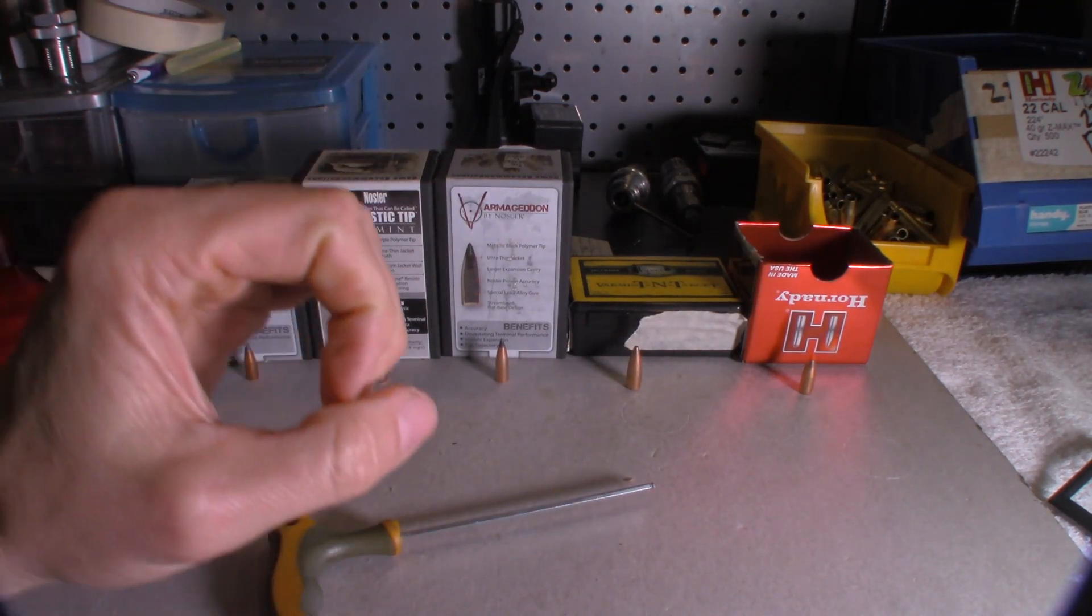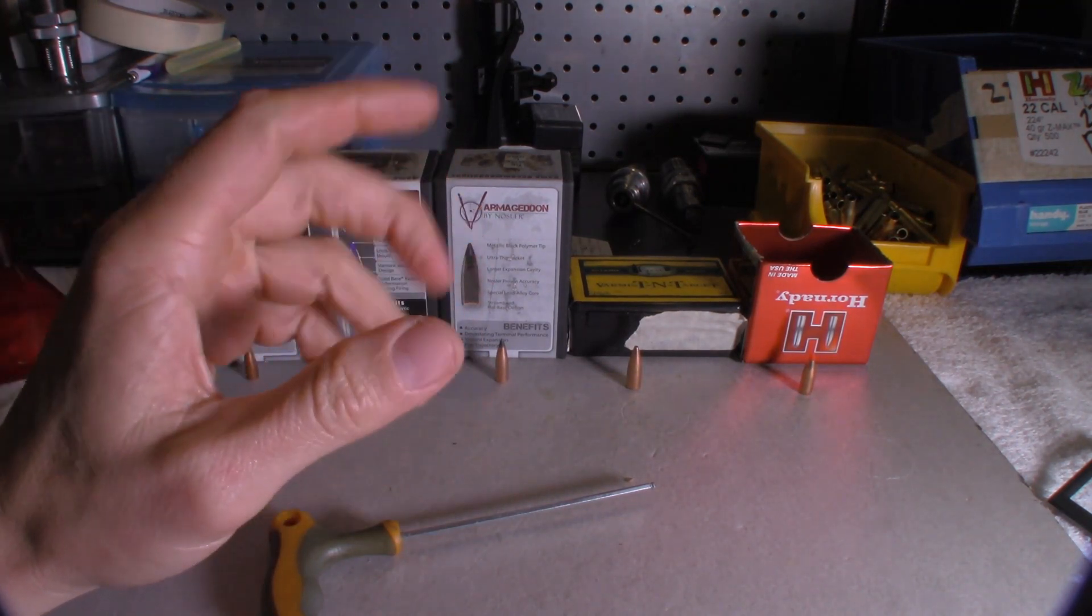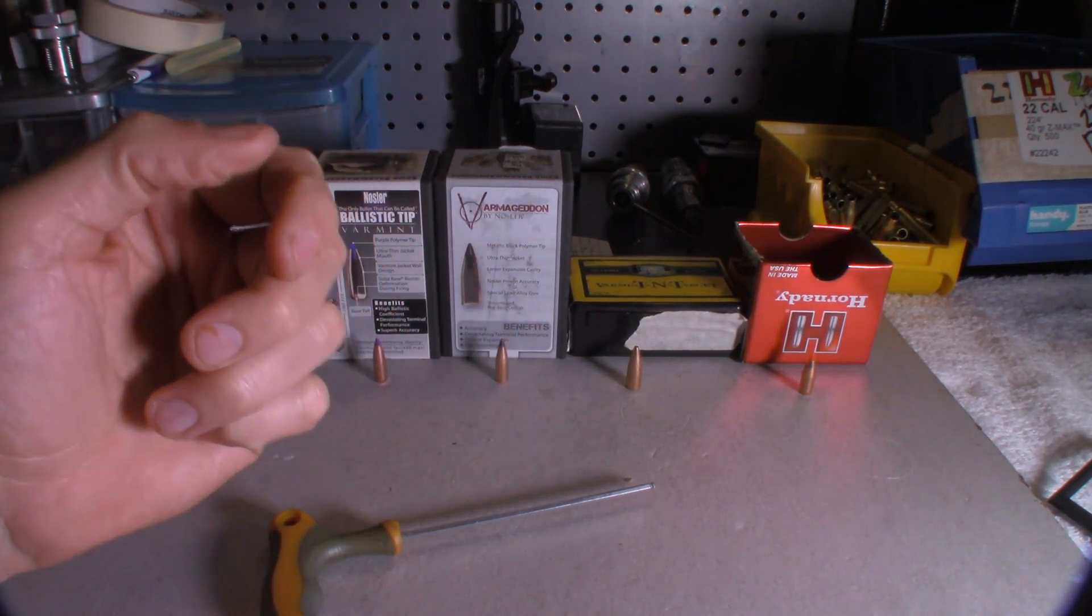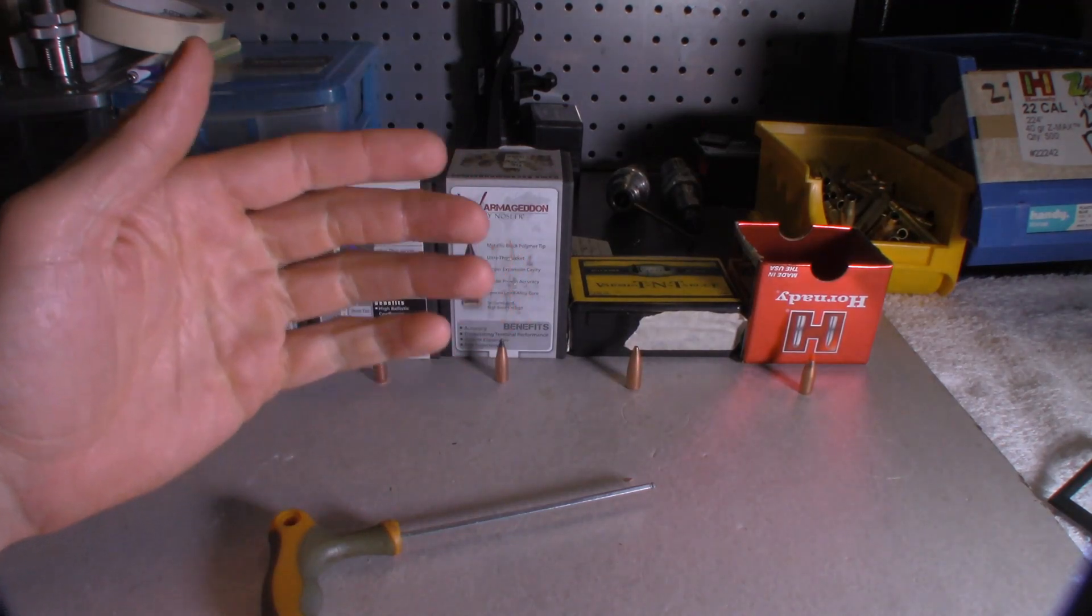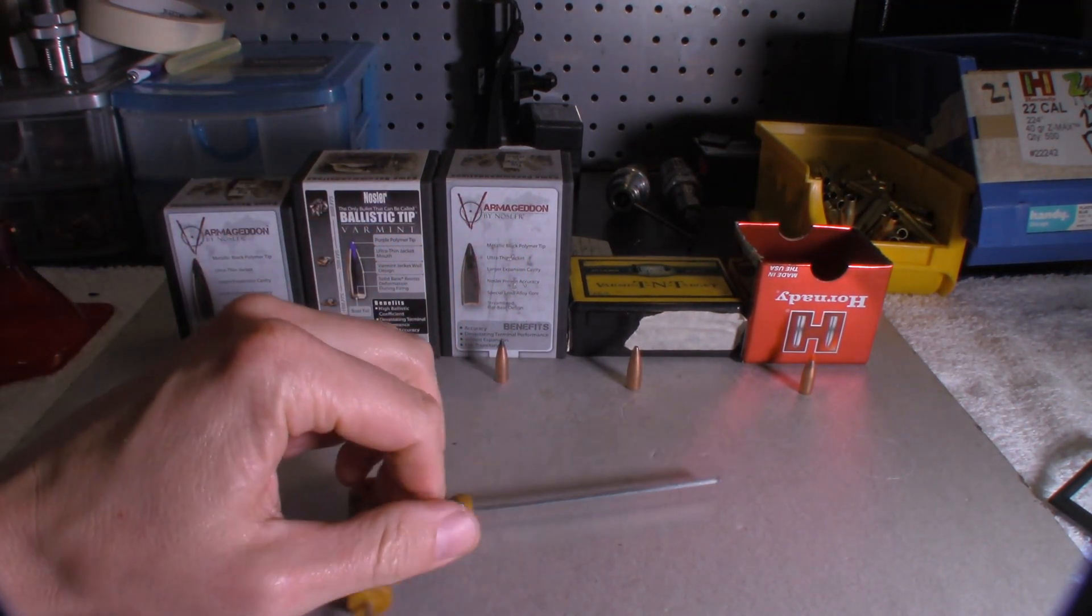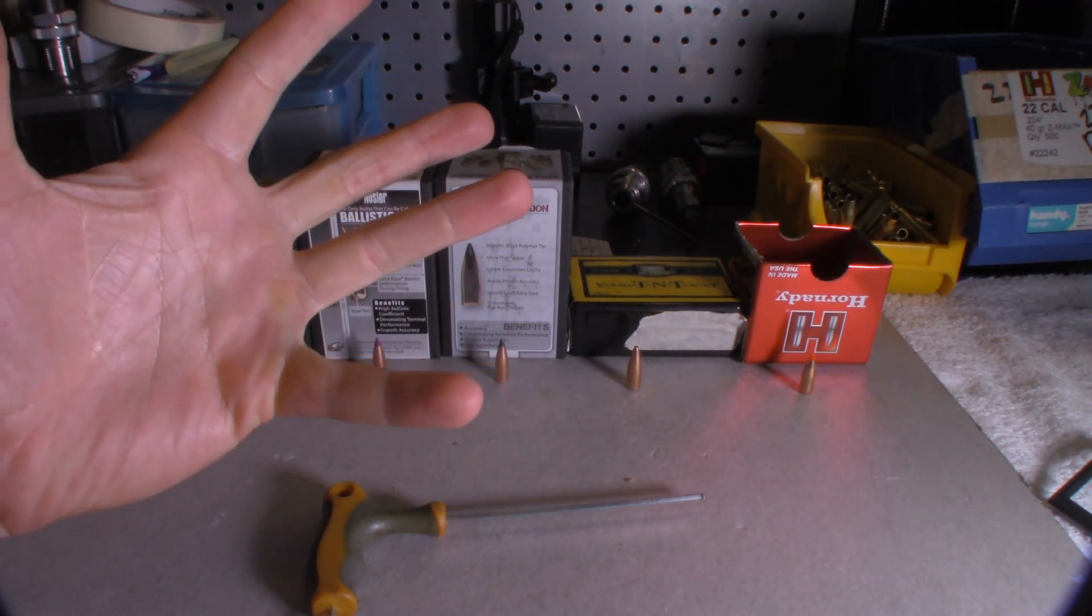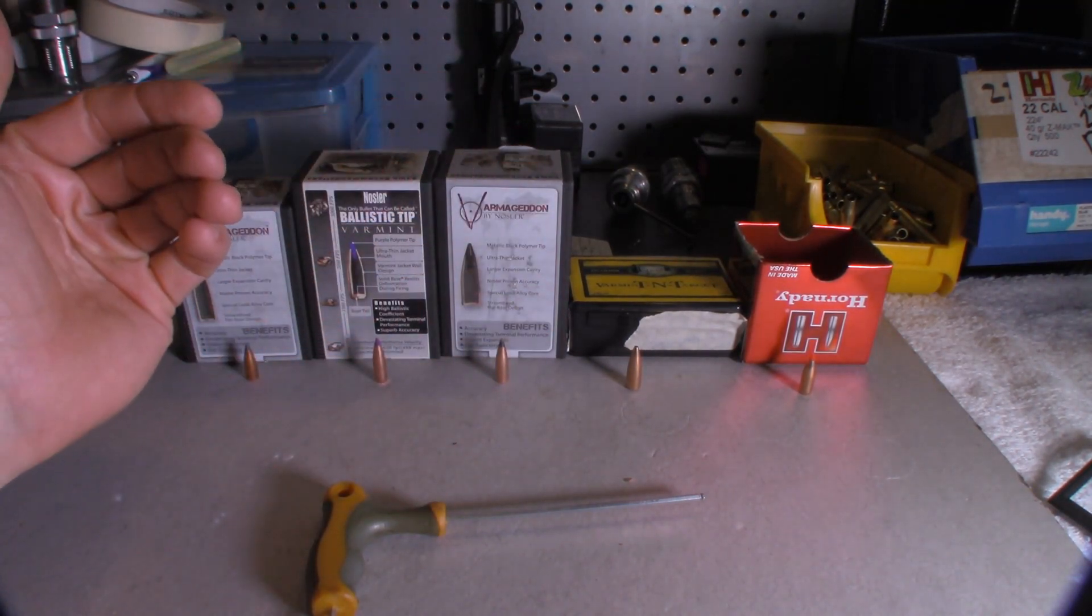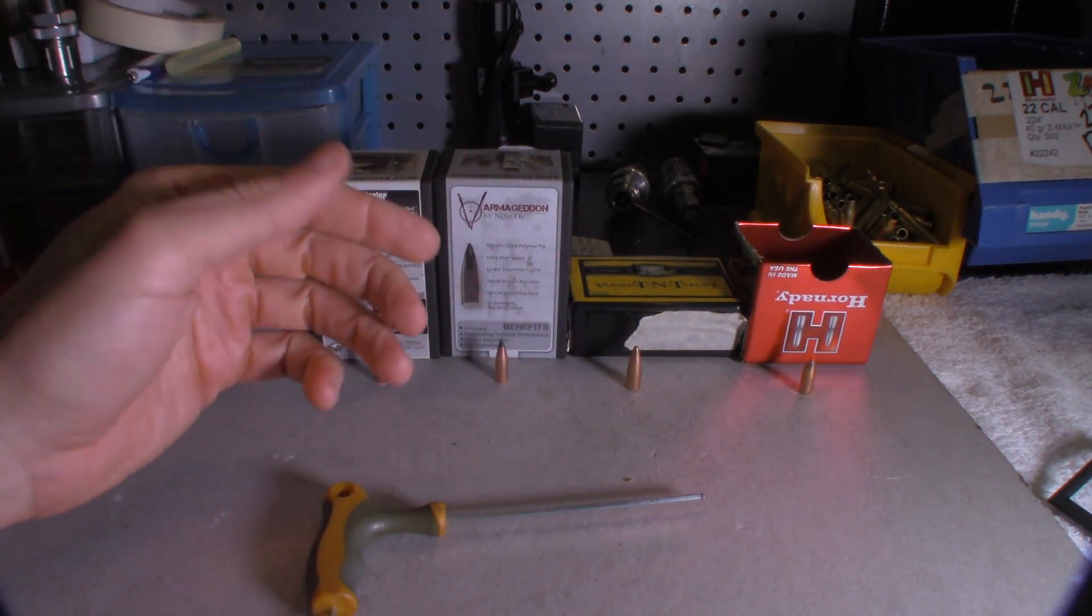What was happening was the Varmageddon wasn't expanding quickly and blowing things to absolute smithereens. Even though on the box it says ultra thin jacket, devastating terminal performance and violent expansion, it wasn't getting violent expansion. It would drill a hole through and only expand in maybe a four inch cavity about an inch and blow that inch hole up out through it. So it wasn't expanding quickly enough to give that result that I really wanted, which was just to blow things to bits. It still knocked them dead, but not what I was looking for.